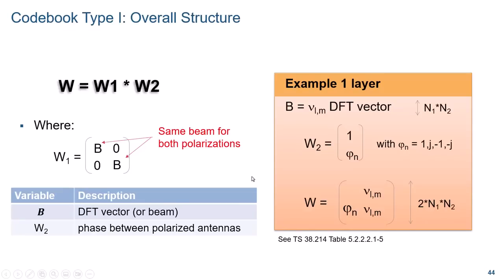Now that we have those tools, let's look at the fundamental formula for codebook type 1. W is the product of W1 and W2. W1 is a block diagonal matrix with matrix B on the diagonal. B is comprised of one DFT vector of lengths N1 and N2. Each matrix B applies to a different polarization of the antennas, meaning both polarizations use the same beams. W2 represents the phases between polarized antennas. Taking the simplest example of one layer, W2 is a two-element vector 1 and phi_N. This results in W being the DFT vectors repeated with a different phase for the second polarization, making it a 2×N1×N2 vector. The UE reports indices L and M, as well as the angle phi_N through index N.